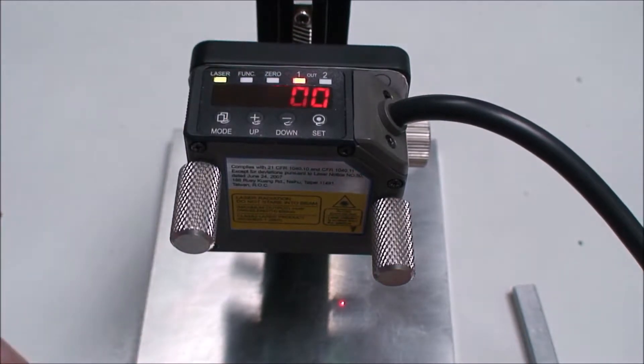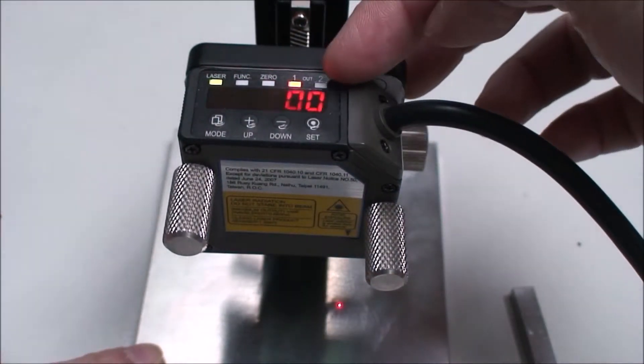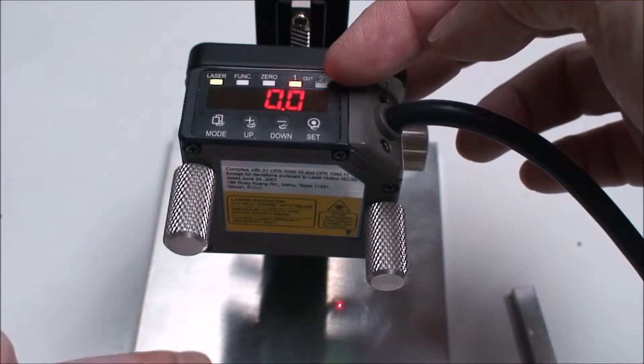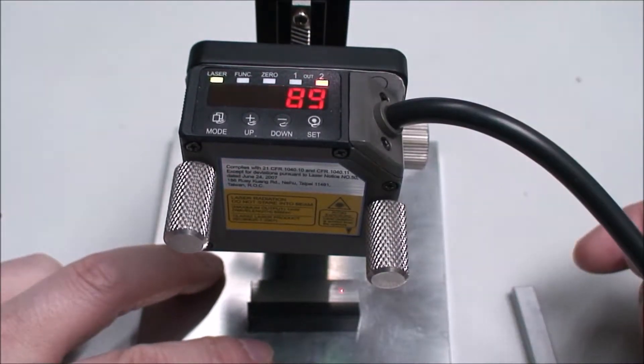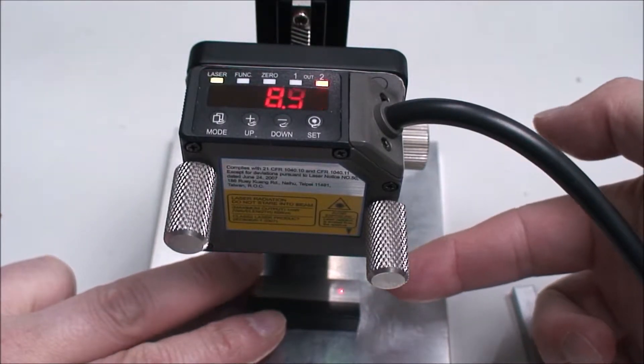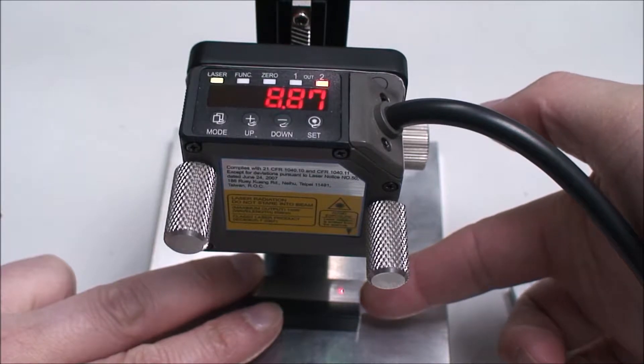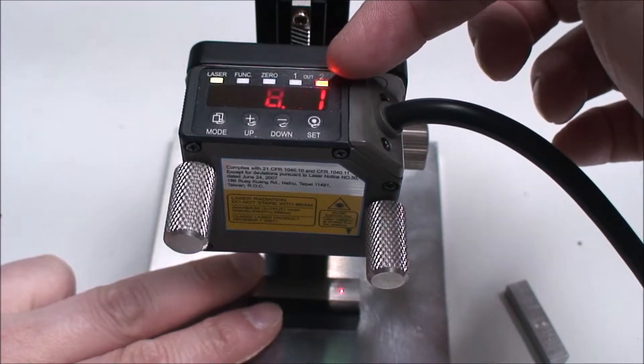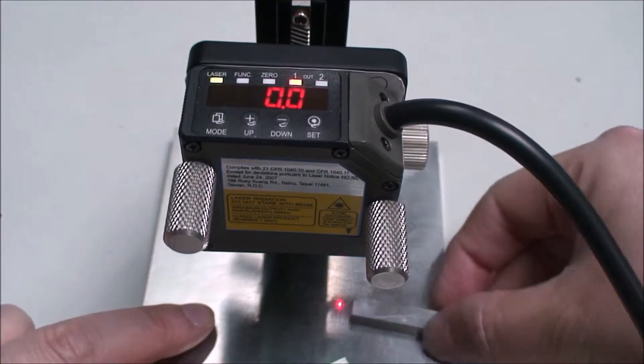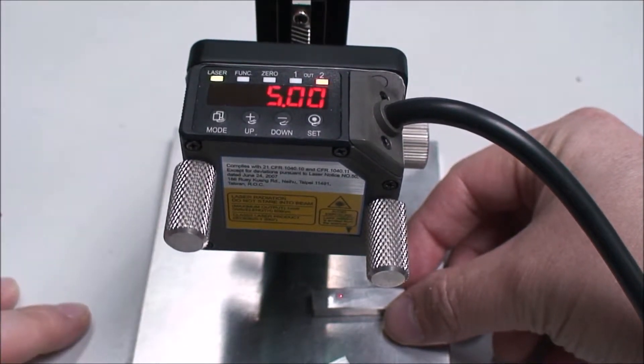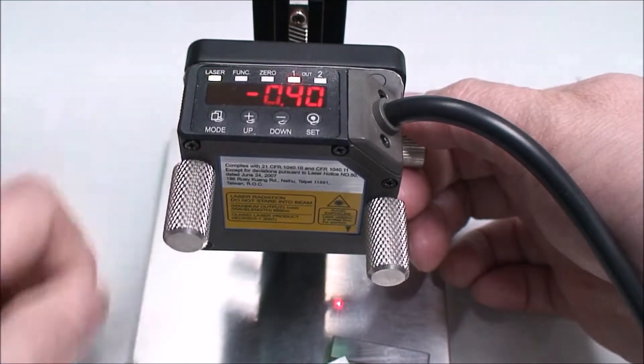Then we finish the setup. We need to focus on the R2 indicators. If the object is greater than the threshold, the R2 indicator will turn on.